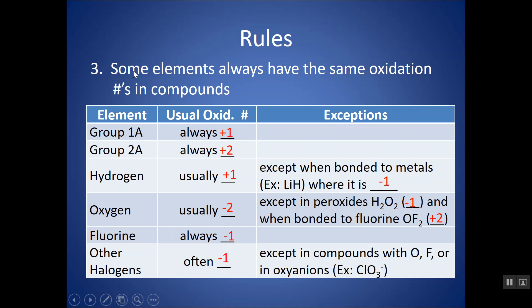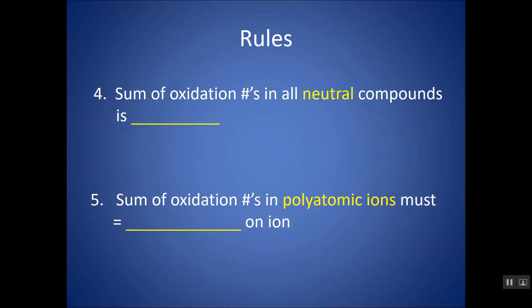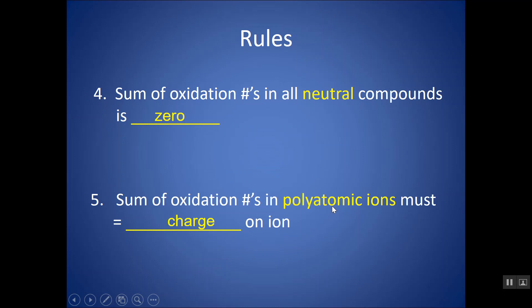This is not a comprehensive list by any means — there are so many more elements than what's included here. To find the oxidation numbers of other elements, you have to solve for them using these two rules: the sum of oxidation numbers in a neutral compound is zero; and if you have a polyatomic ion, the sum of oxidation numbers equals the charge on the ion.